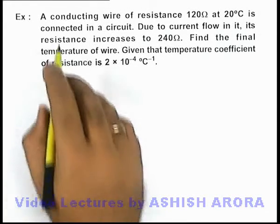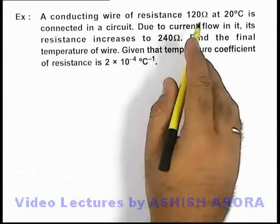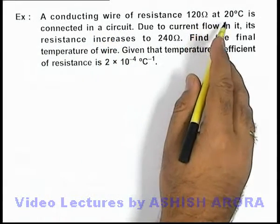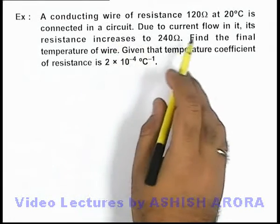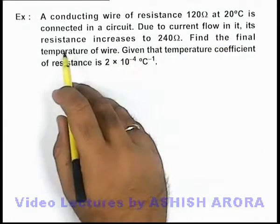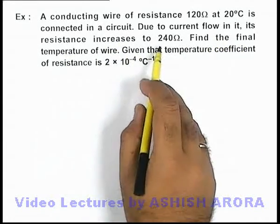In this example, we are given that a conducting wire of resistance 120 ohms at 20 degrees Celsius is connected in a circuit. Due to the current flow in it, its resistance increases to 240 ohms.